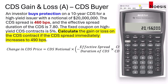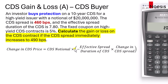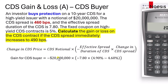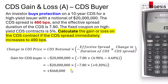Alternatively, we can use this formula: CDS notional multiplied by negative effective spread duration times the change in CDS spread. To calculate the gain or loss for the CDS buyer directly, we replace the CDS notional with negative $20,000,000 for the short position. The spread duration is 7.8 and the change in CDS spread is positive 0.3%. A negative times a negative gives a positive, and you get $468,000.